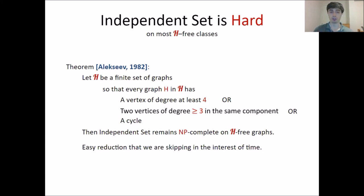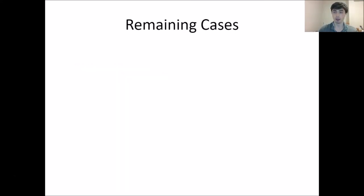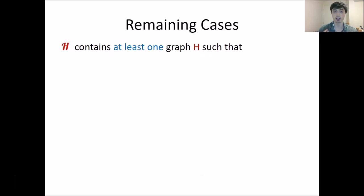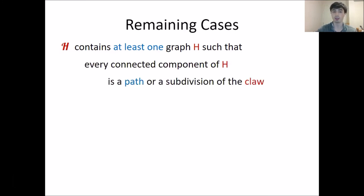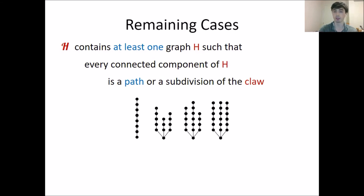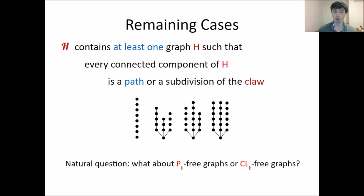Those conditions are really quite general, and they leave us with some pretty restricted remaining cases. In particular, the remaining cases are basically when the set contains at least one graph H such that every connected component of H is a path or subdivision of the claw — a forest of paths and subdivided claws. So a natural question for us to ask is: what is the complexity of PK-free graphs or CLK-free graphs?